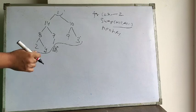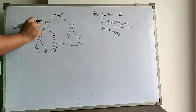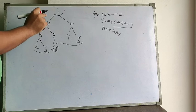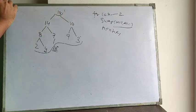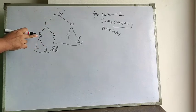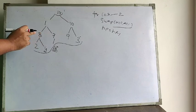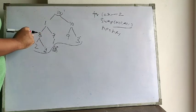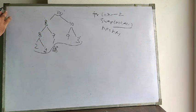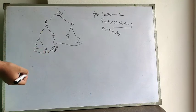Now before doing the next exchange, we rebuild the heap from the remaining elements. 1 is less than 14 and 10, so we exchange 1 with the biggest of those three — which is 14. So 14 moves up and 1 goes down. Now again 1 is less than both 7 and 8, so we exchange 1 with 8.